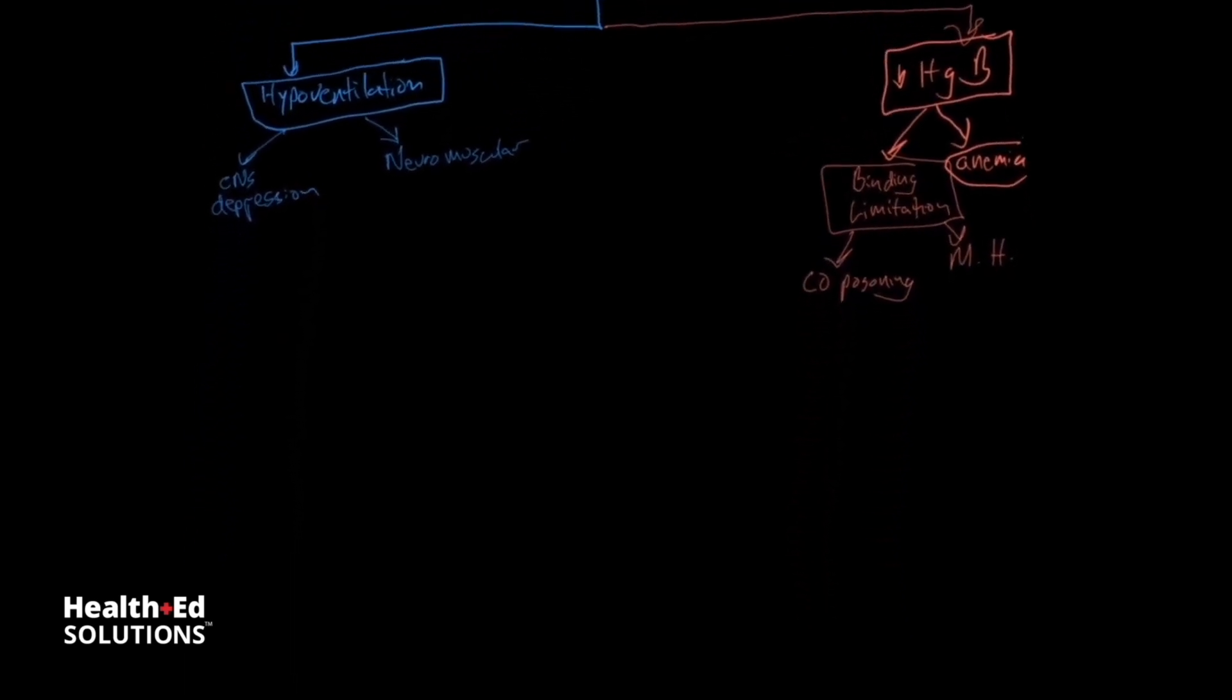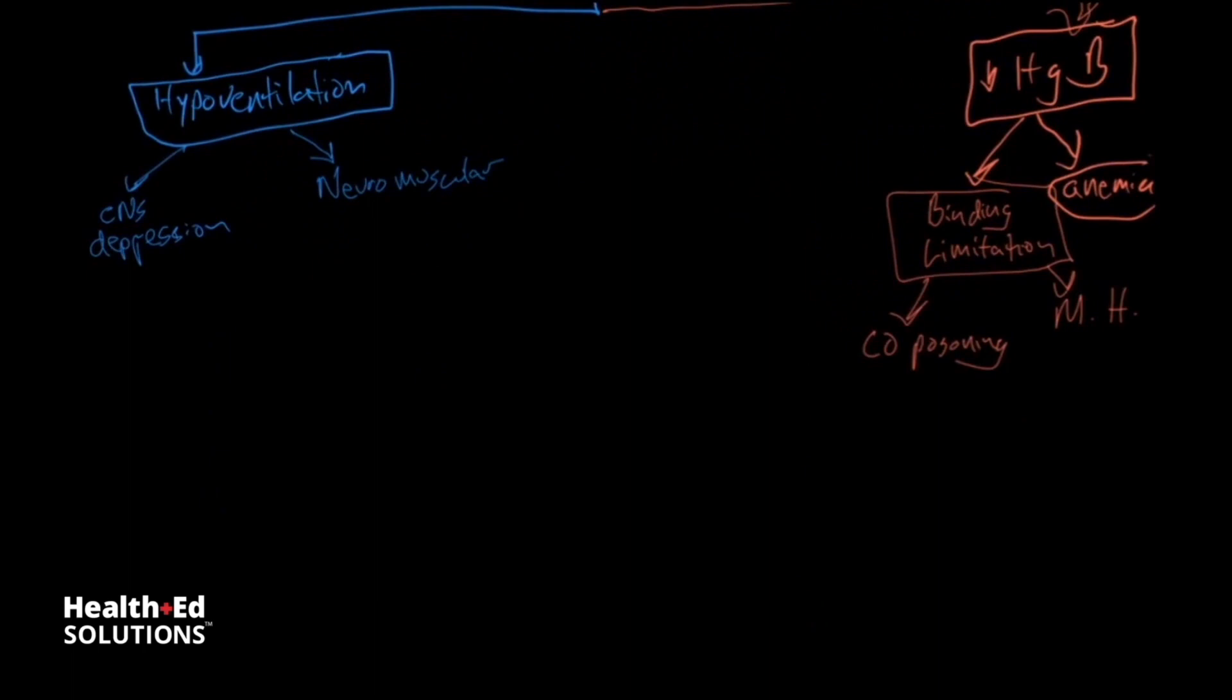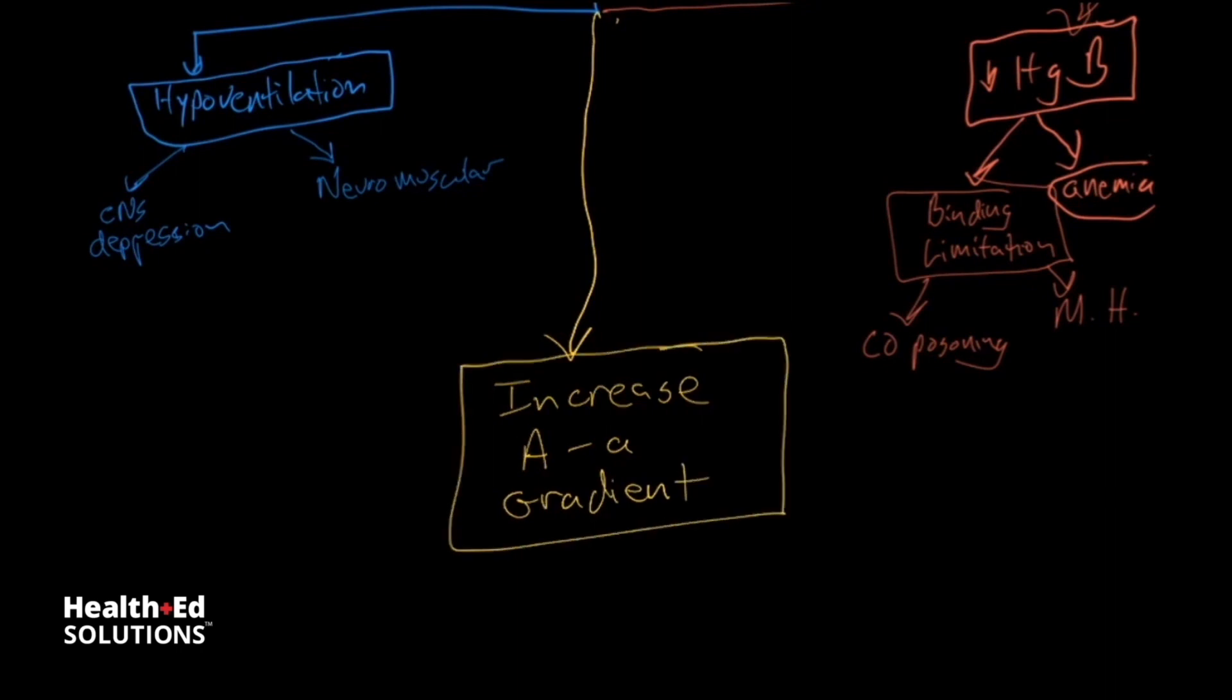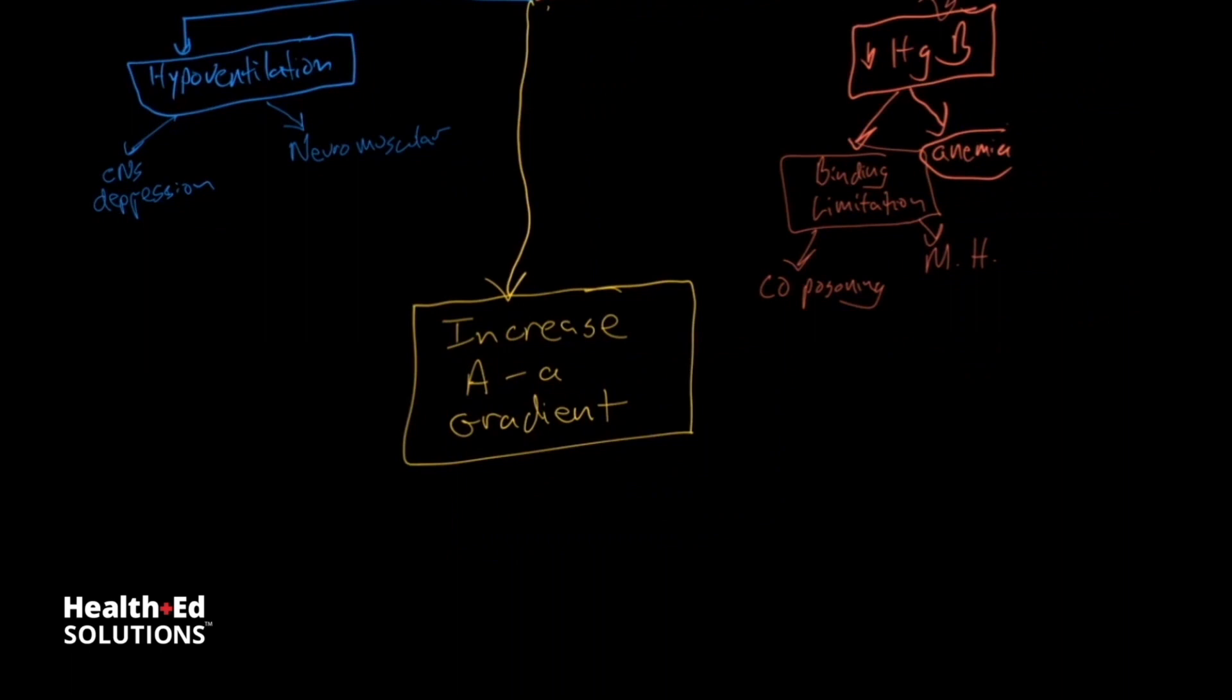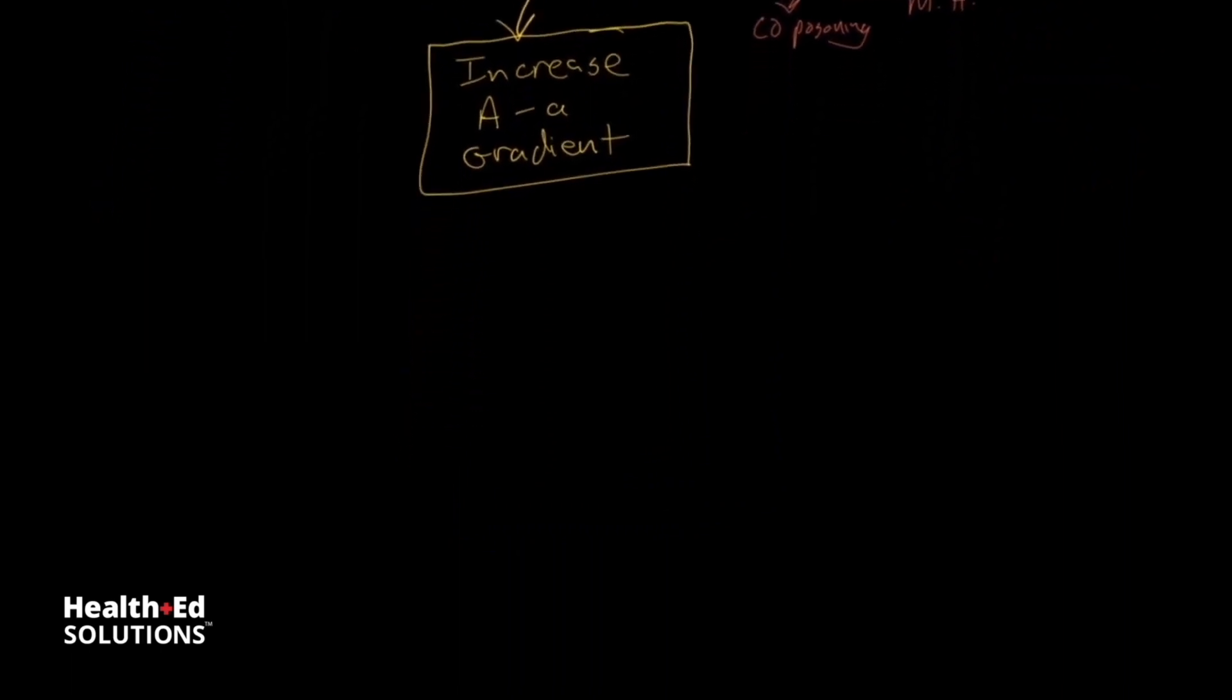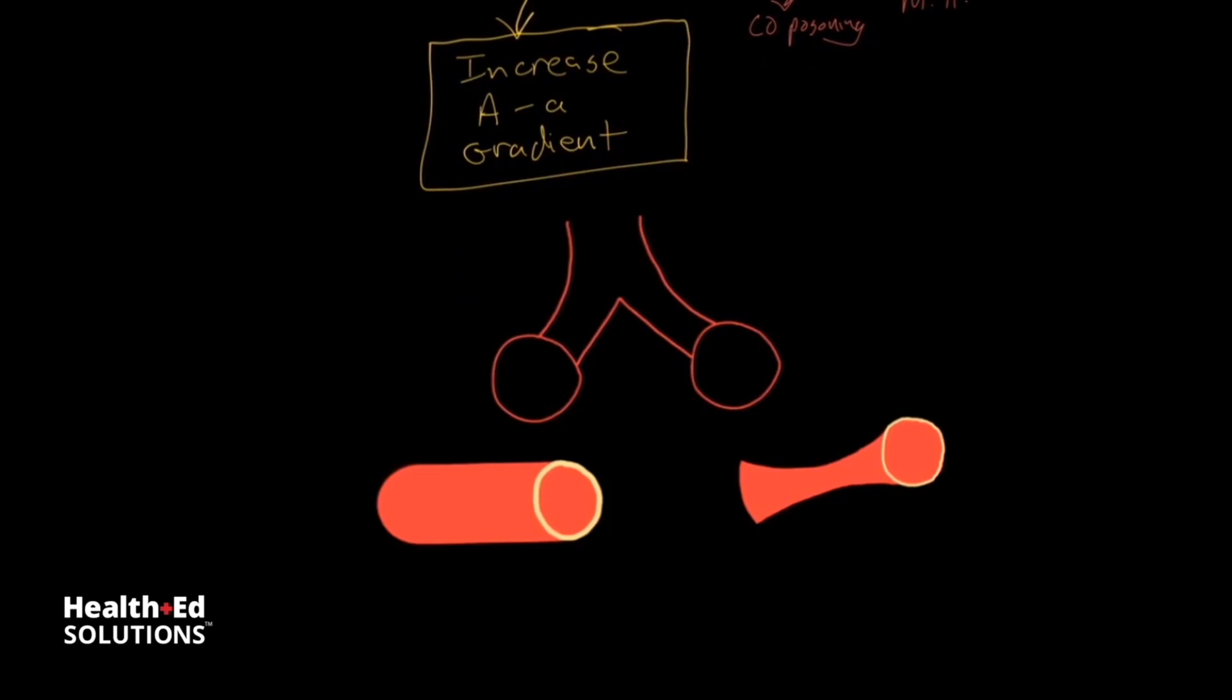The third class is the largest and requires some more in-depth explanation. And these are things that increase the AA gradient, or the alveolar-arterial gradient. And of this category, there are, again, three major causes.